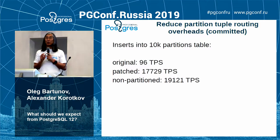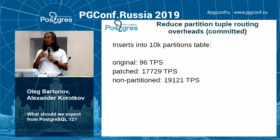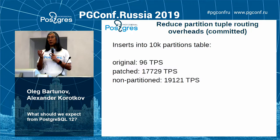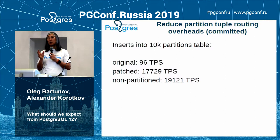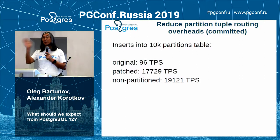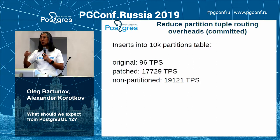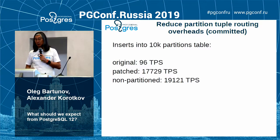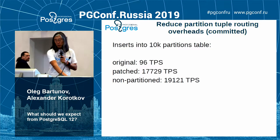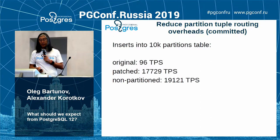The non-partitioned table is fastest simply because there's no overhead for partition selection. When we get incoming data that is localized, you get a huge benefit — for example, 1,000 rows going to one table are processed only once instead of thousands of times. This is a great benefit.